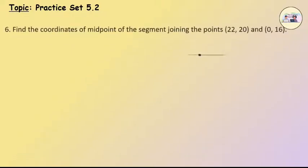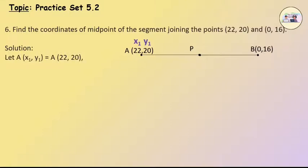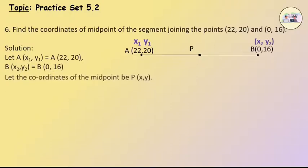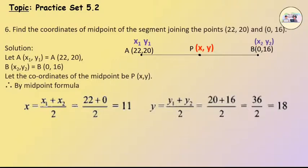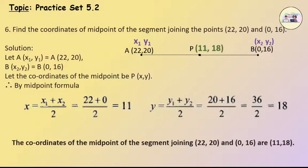Q6: Find the coordinates of the midpoint of the segment joining the points (22, 20) and (0, 16). Solution: Let A(x1, y1) = A(22, 20) and B(x2, y2) = B(0, 16). Let the coordinates of the midpoint be P(x, y). By the midpoint formula, x = (22 + 0)/2 = 11, and y = (20 + 16)/2 = 36/2 = 18. The coordinates of the midpoint are (11, 18).